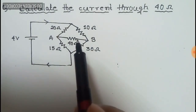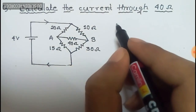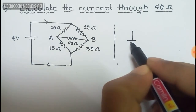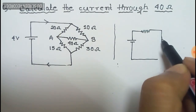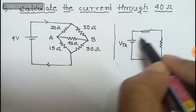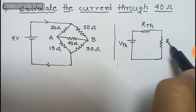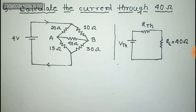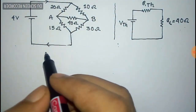This is a circuit and we have to calculate the current through this 40 ohm resistance. For this, we shall first convert this circuit into a Thevenin equivalent circuit so that our calculation may be easy. A Thevenin equivalent circuit contains a voltage source, source resistance, and a load resistance. The voltage is V_thevenin, the resistance is R_thevenin, and the load resistance here is 40 ohm.